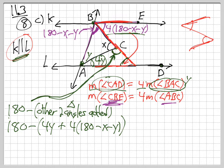Good so far? And so what's that going to be? 180 minus, let's take care of the inside first. 4 times 180, use your calculator, 720 minus 4X minus 4Y. These guys drop out.